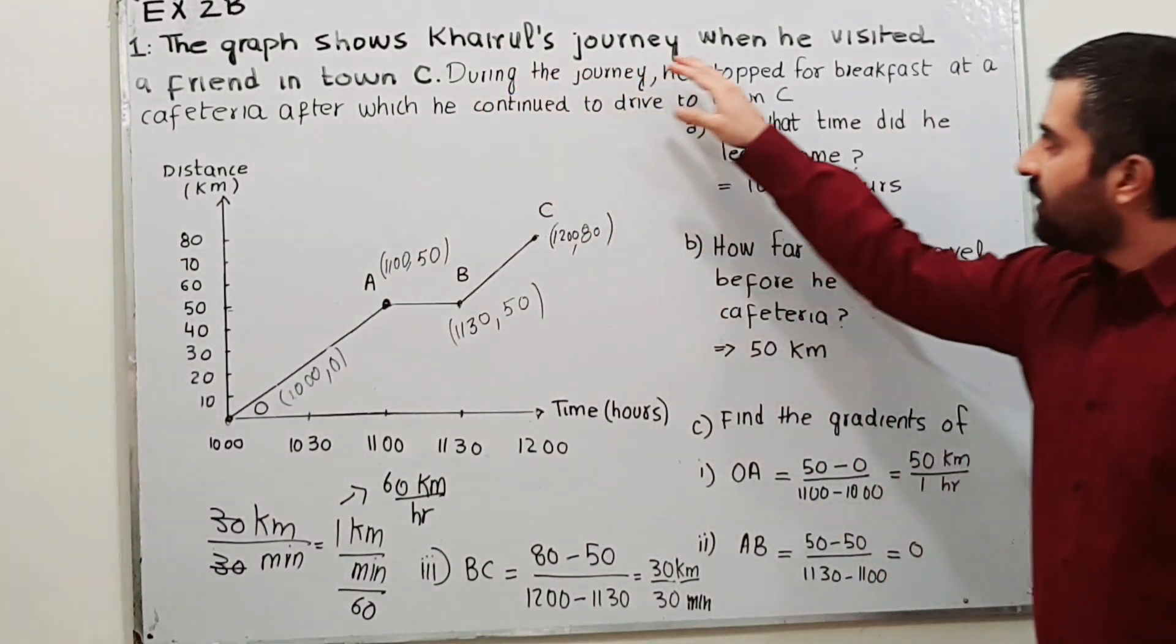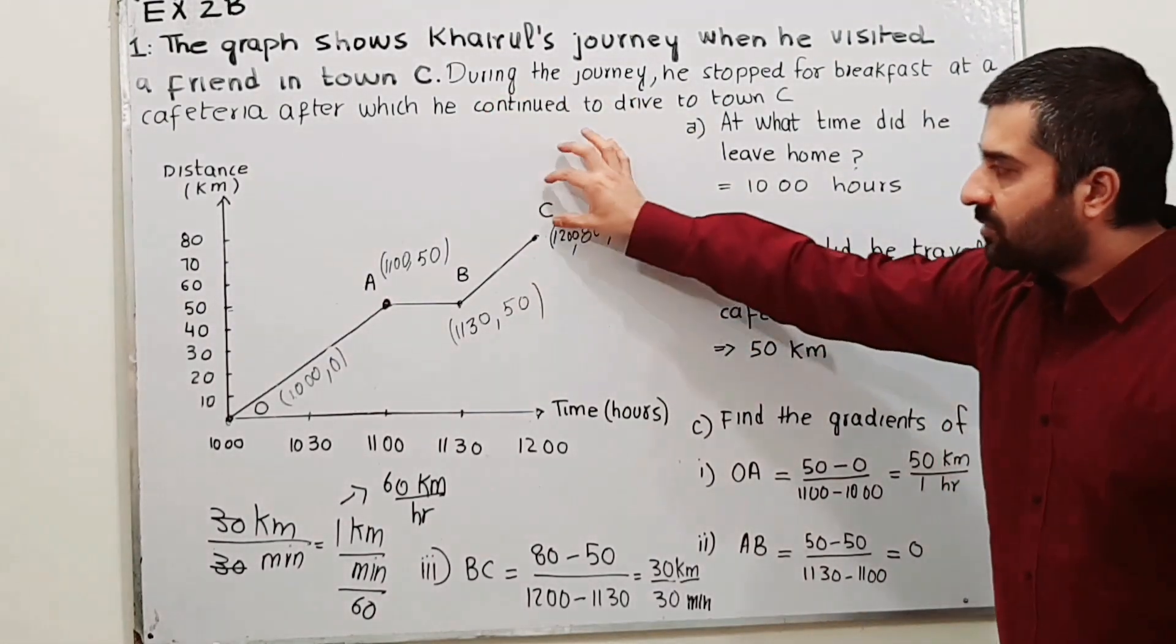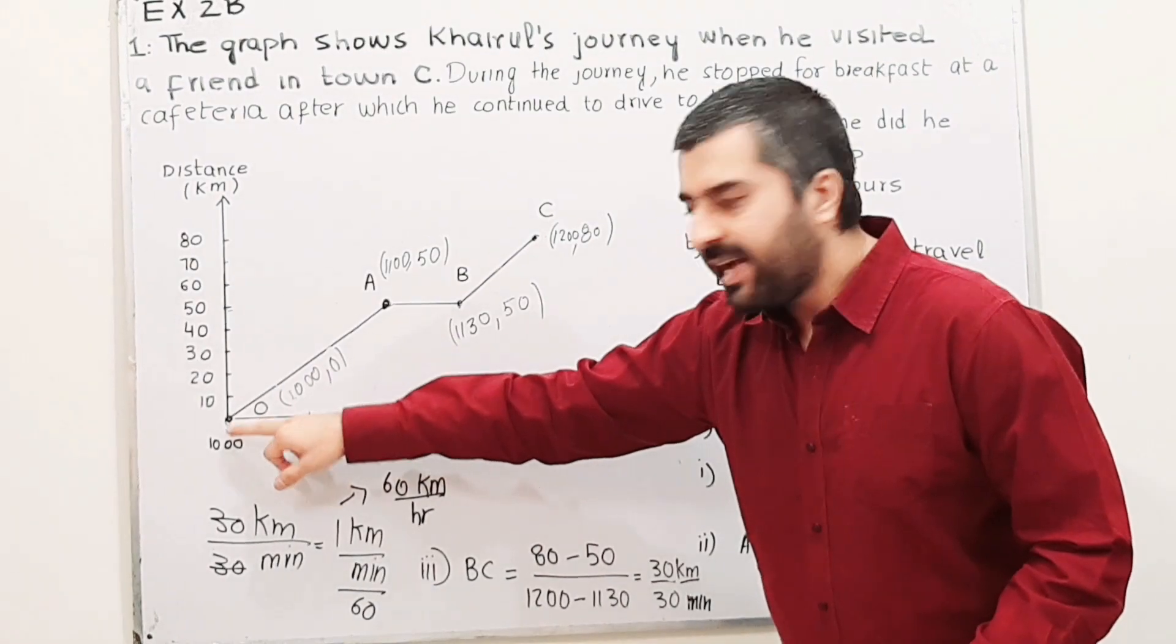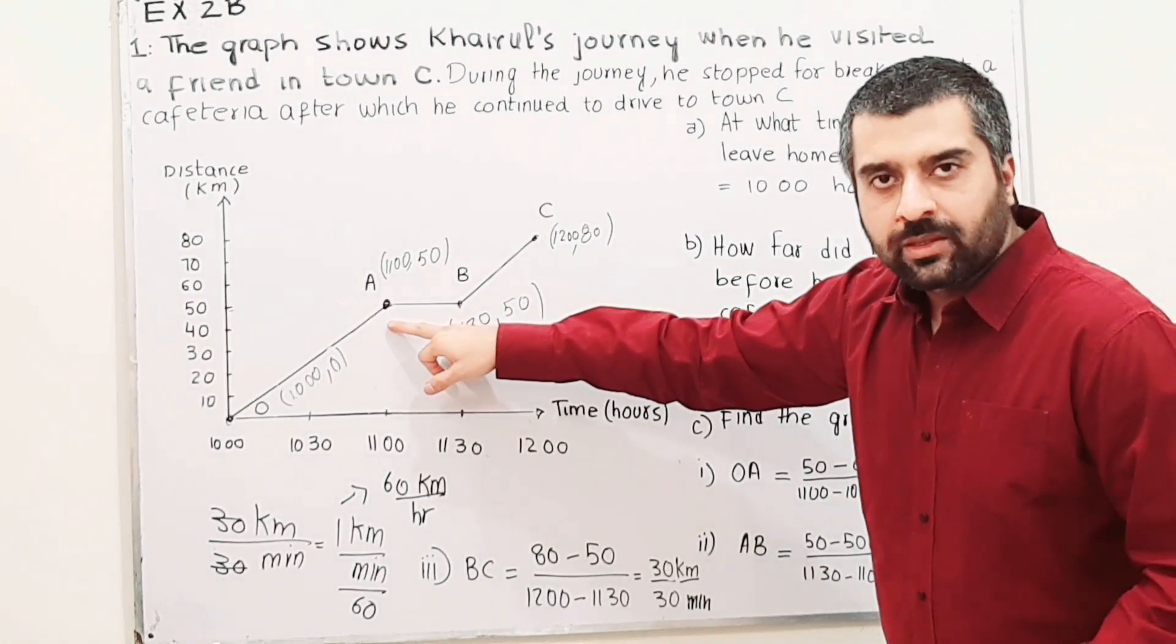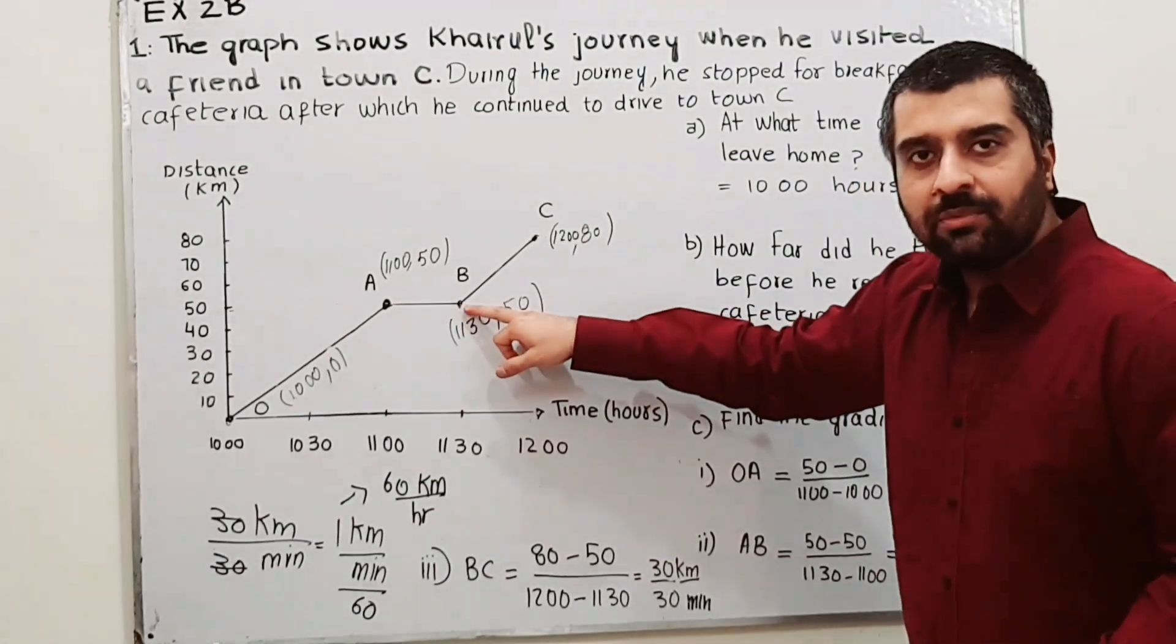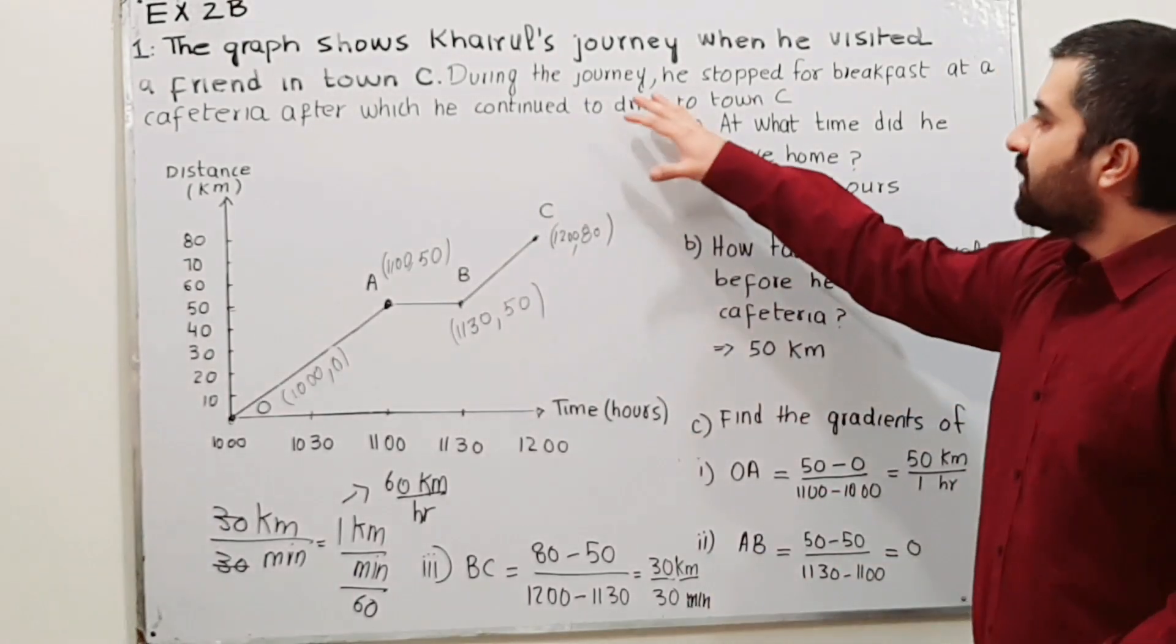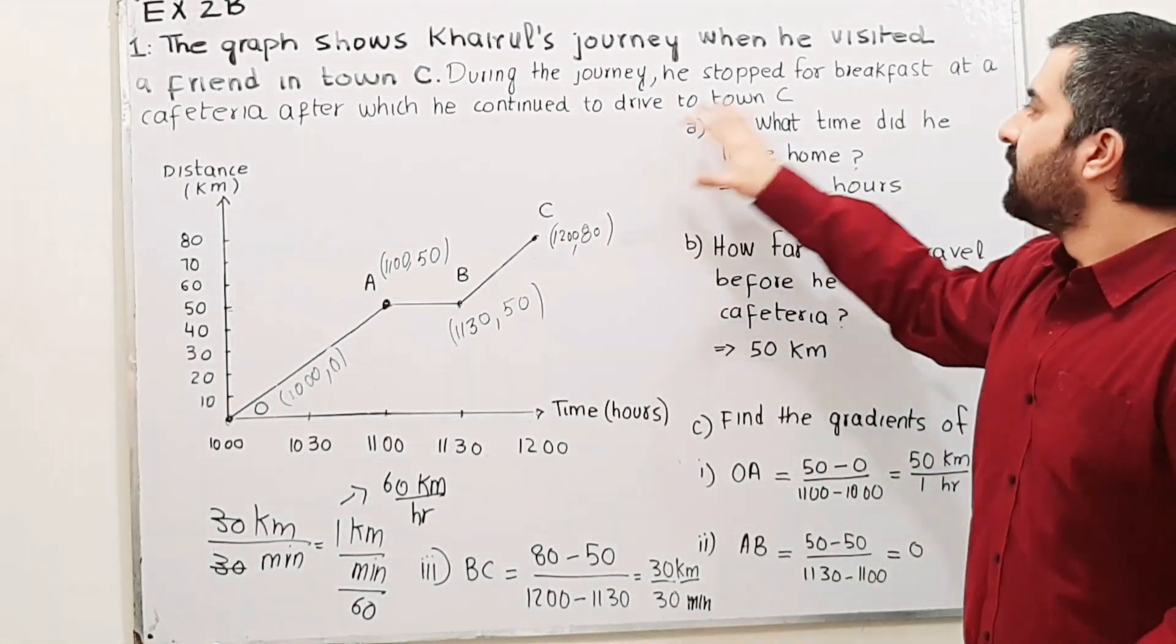The graph shows Harrell's journey when he visited a friend in town C. This graph shows the journey when Harrell started from his home at 10 hours and continued till he reached point A. Point A is the cafeteria where he stayed up till this time, and then he continued his journey again from B to C. During the journey, he stopped for breakfast at a cafeteria, after which he continued to drive to town C.